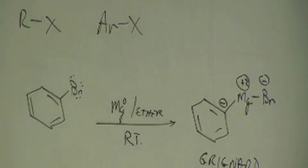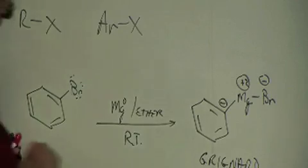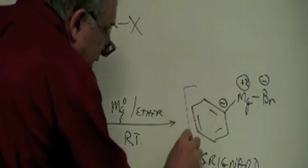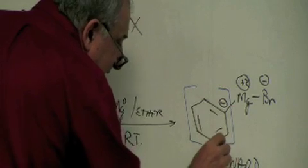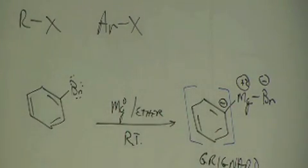The key to the Grignard reagent is the fact that you've generated a carbon that can act as a nucleophile, which means that part of the molecule is going to be seeking a positive charge. It's either an induced positive charge or a for real positive charge.